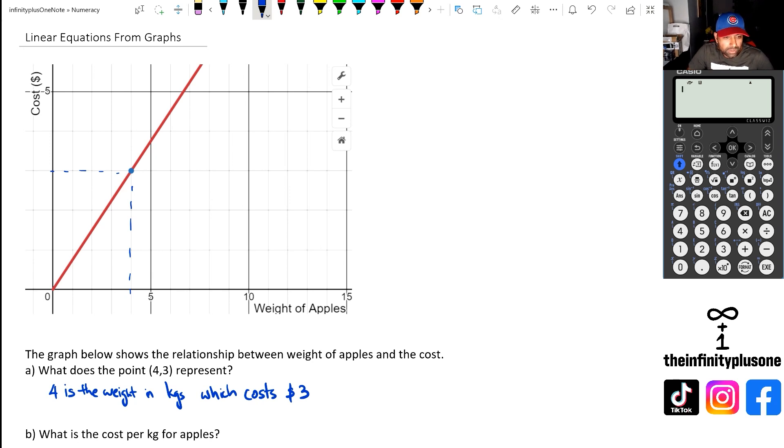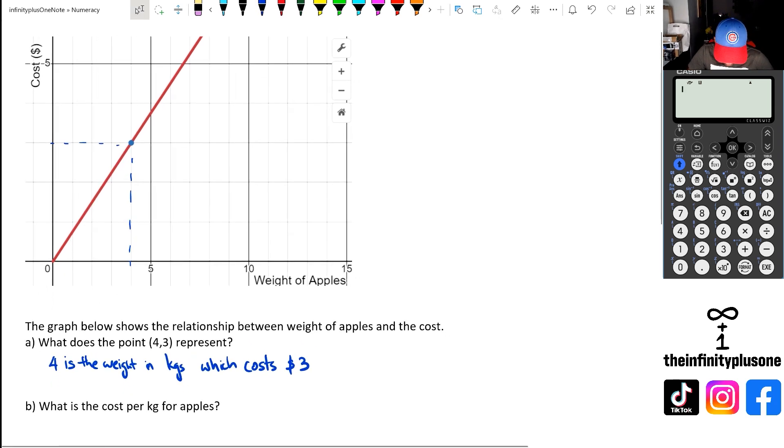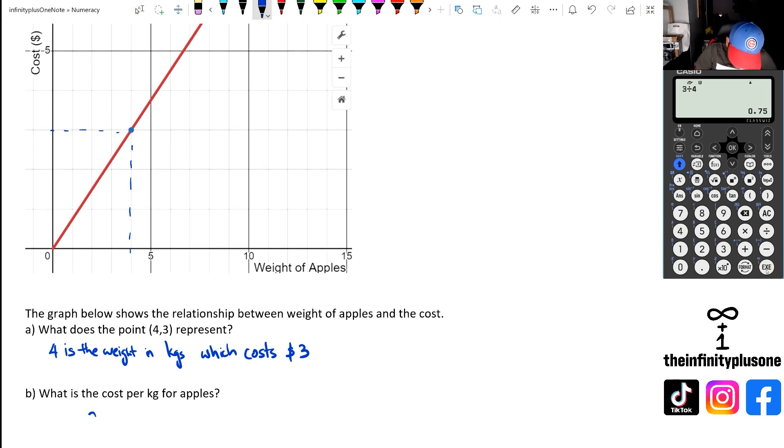Now, the next question is, what is the cost per kg for apples? We know that it's costing $3 for 4 kgs. So we're going to do 3 divided by 4. That should give us how much it costs per kg. So per kg for apples, it costs 75 cents for a kg of apples.